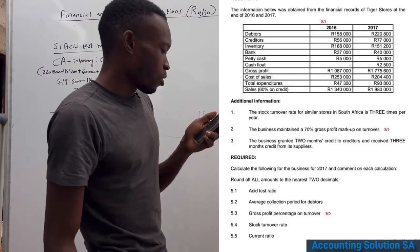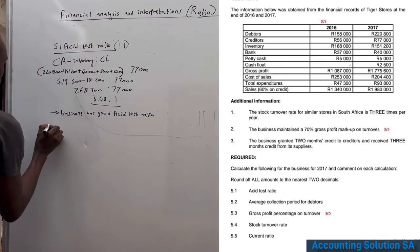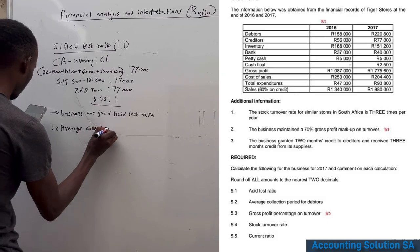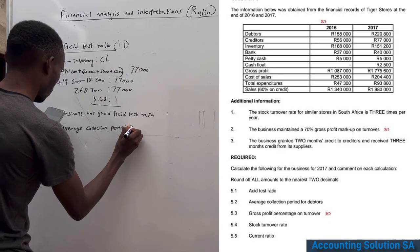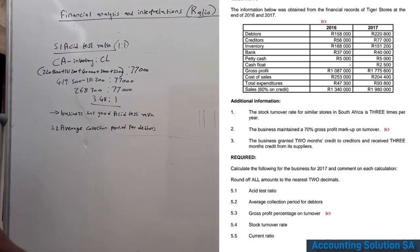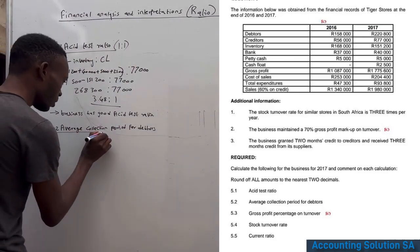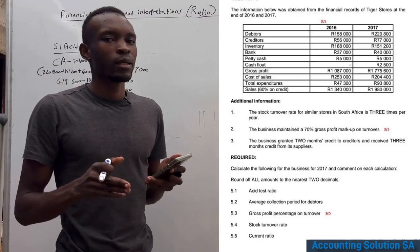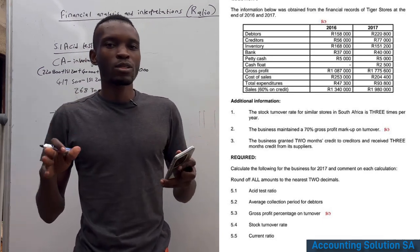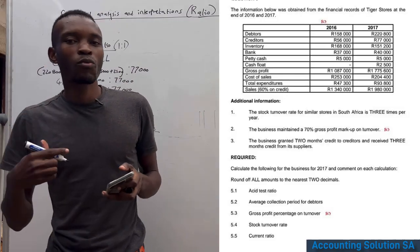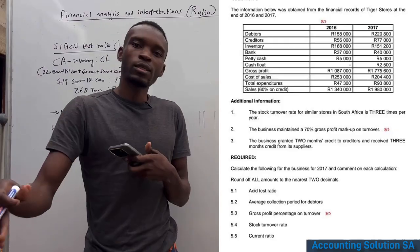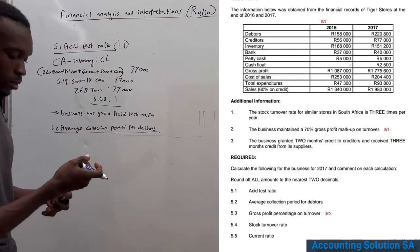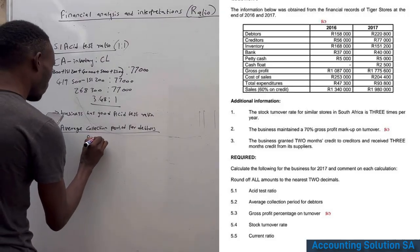Question 5.2 is the average collection period for debtors. This ratio tells us how many days it takes to collect money from customers who purchased on credit — some pay early, some late, some within a month. The formula is: average debtors divided by credit sales, multiplied by 365.